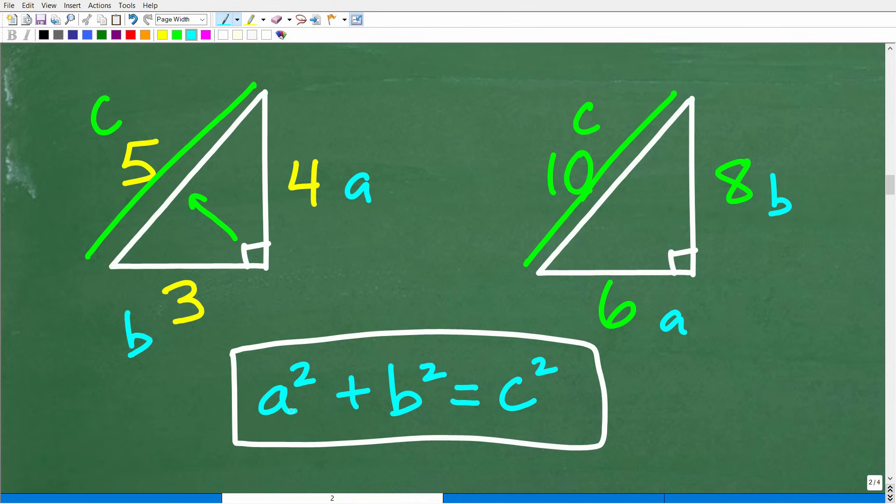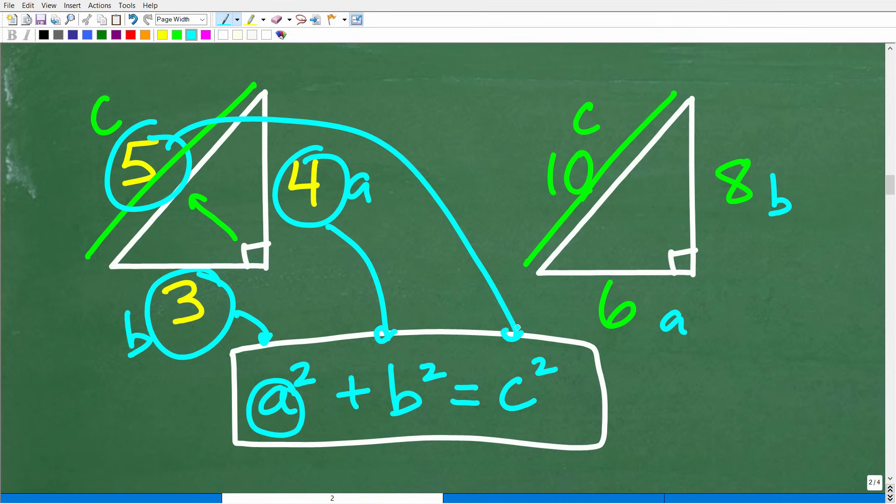So the main thing is to know, in this formula, C is always the longest side. Okay, so what does this mean, though? Well, it means that if we take the square, if we square the shorter side, so if we take three squared, for example, and then we add it to four squared, that's going to be equal to five squared. This relationship always holds true in any right triangle.